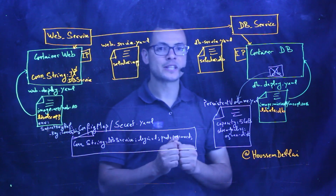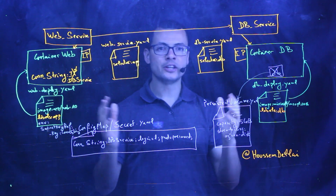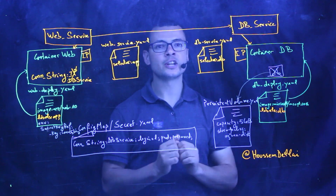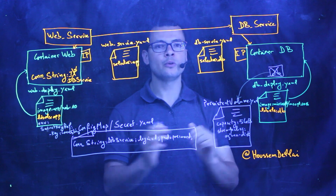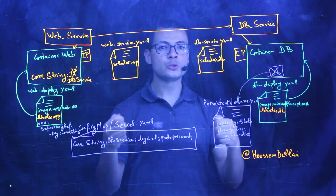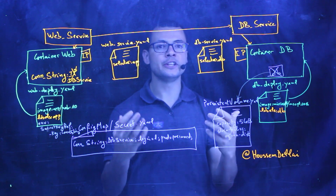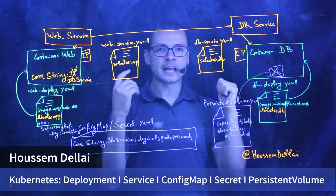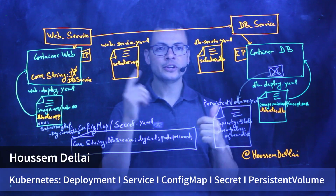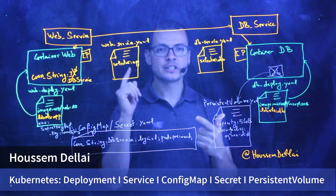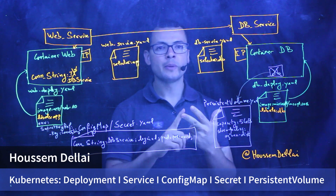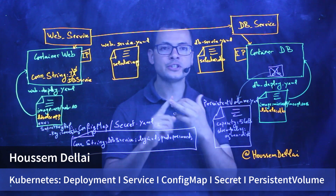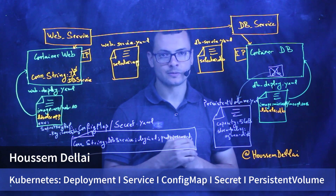Hi developers, I'm Hossein Delahaye, software engineer. In this Lightboard session, I'll give you an overview of the most useful Kubernetes objects — things like the deployment, the services, config maps and secrets, and the persistent volumes.